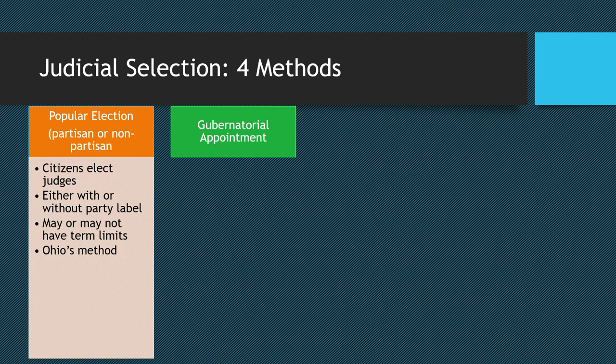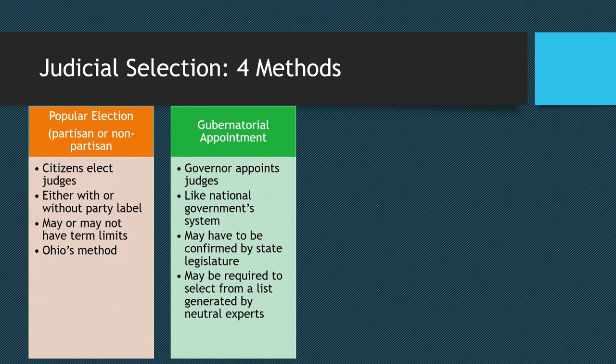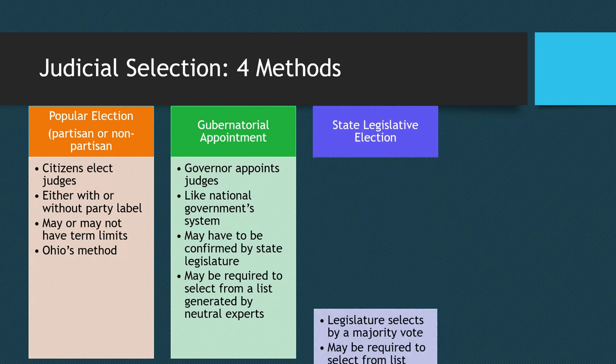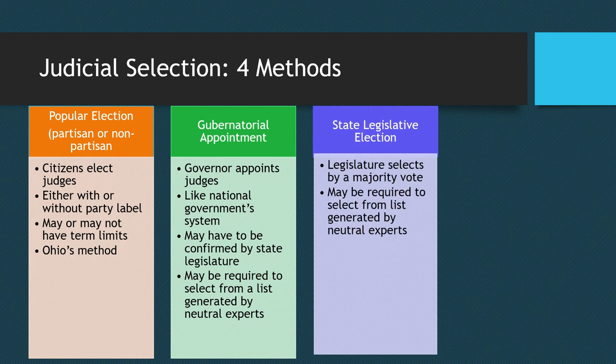The next type is gubernatorial appointment, which means the governor appoints judges. This mirrors our national government, where the president appoints federal judges. In some states, appointments must be confirmed by the state legislature. The governor may also be required by the state constitution to select a candidate from a list generated by legal experts. A few states have selection of judges by the state legislature, where the legislature has a majority vote and picks judicial candidates, sometimes also from a list of neutral experts.